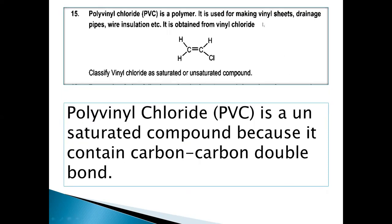Polyvinyl chloride, which you are looking at, question number 15. Polyvinyl chloride PVC is a polymer. It is used for making vinyl sheet, drainage pipes, wire insulation, etc. It is obtained from vinyl chloride. Vinyl chloride is made by vinyl chloride. What is C2H3Cl?